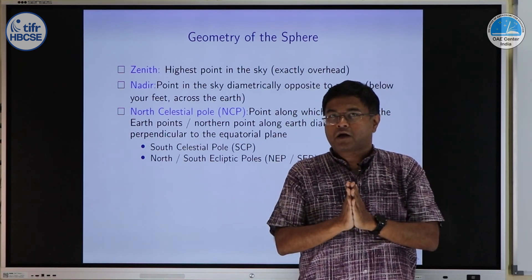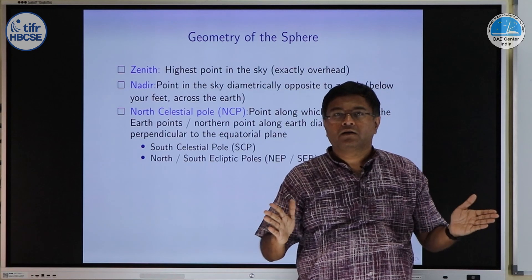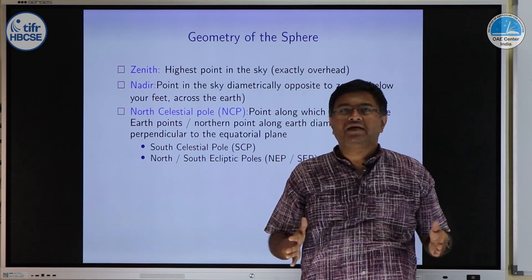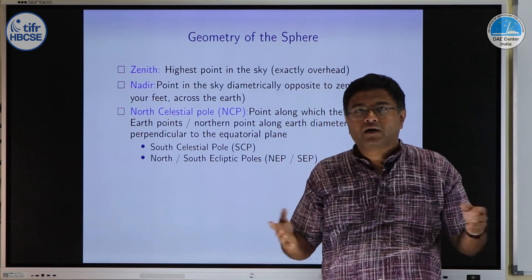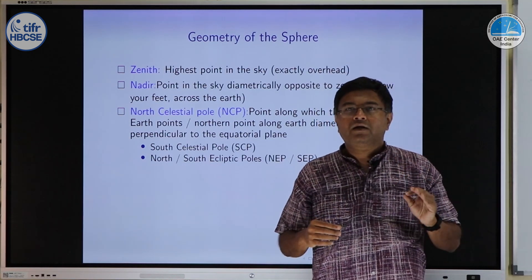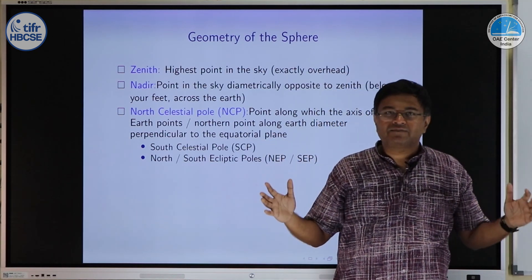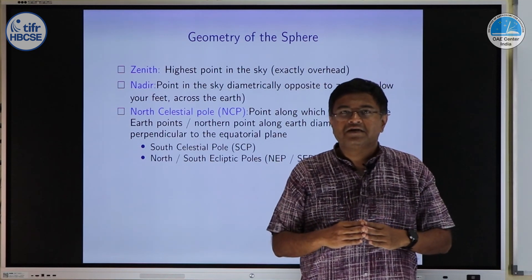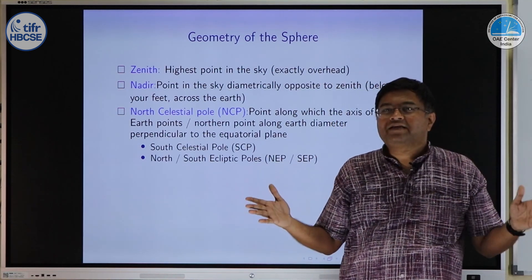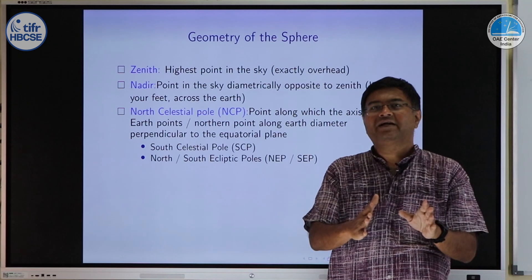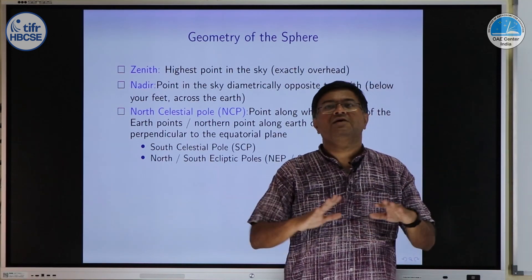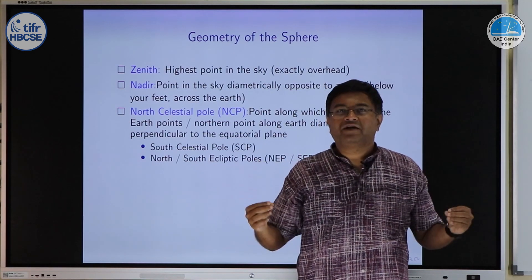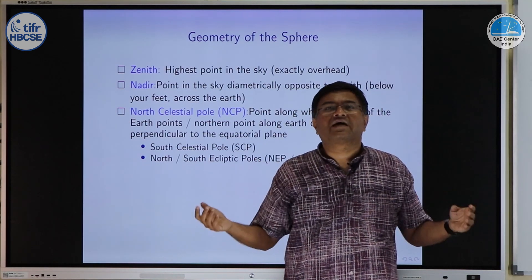In all this I am not mentioning any star. We are used to saying Polaris is the north star. But remember we live in some duration of centuries where by chance there is a bright star very close to the north celestial pole. North celestial pole is a point on our coordinate grid. It has nothing to do with star.